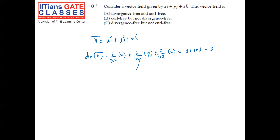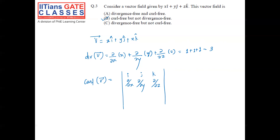Options A and C are wrong, so you can directly choose option B. But to solve it completely, we also calculate the curl. The curl of v-bar uses the determinant with i, j, k in the first row, ∂/∂x, ∂/∂y, ∂/∂z in the second row, and x, y, z in the third row. We get 0i + 0j + 0k — curl is 0. So option B is correct: the given vector field is curl-free but not divergence-free.